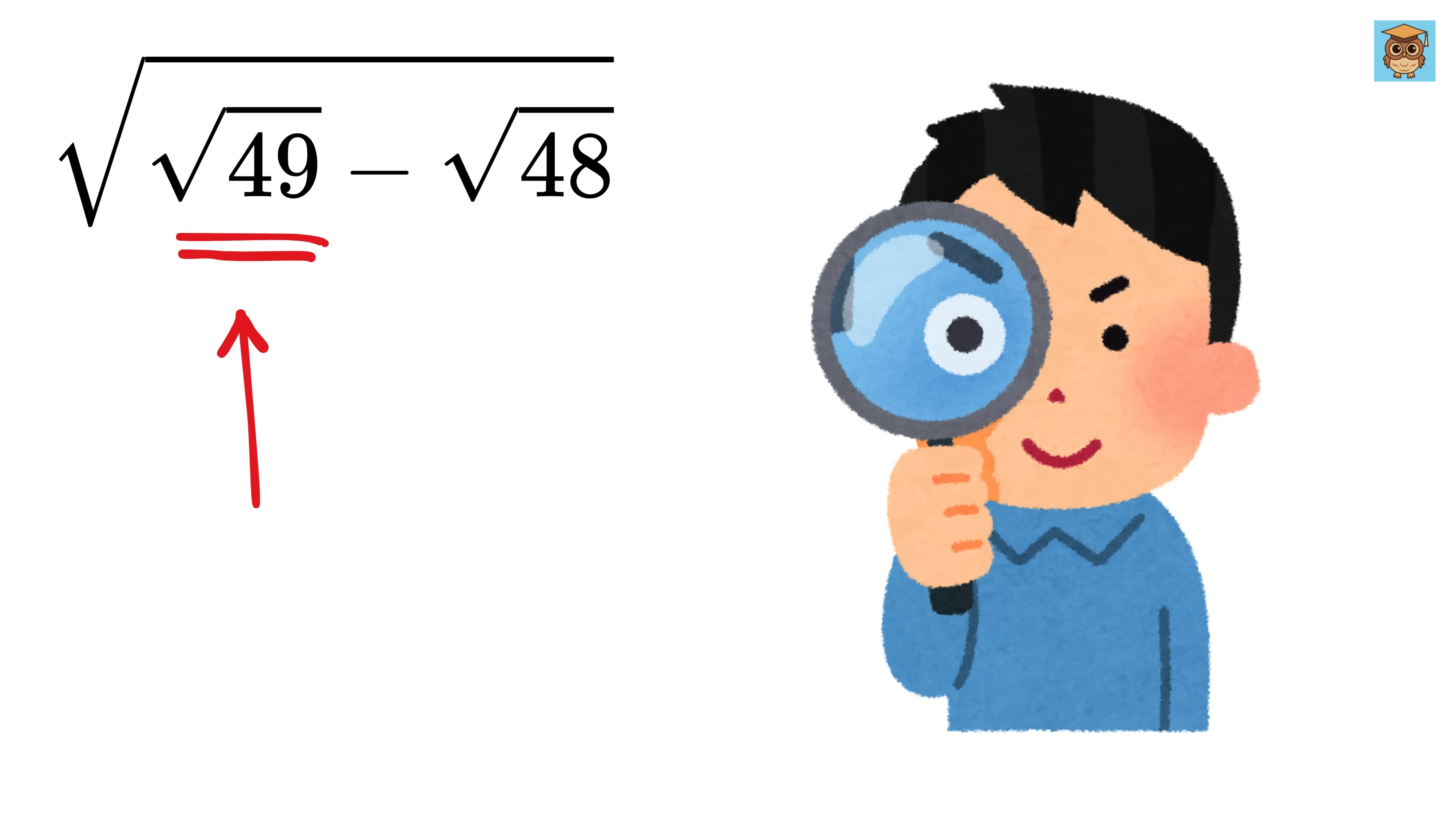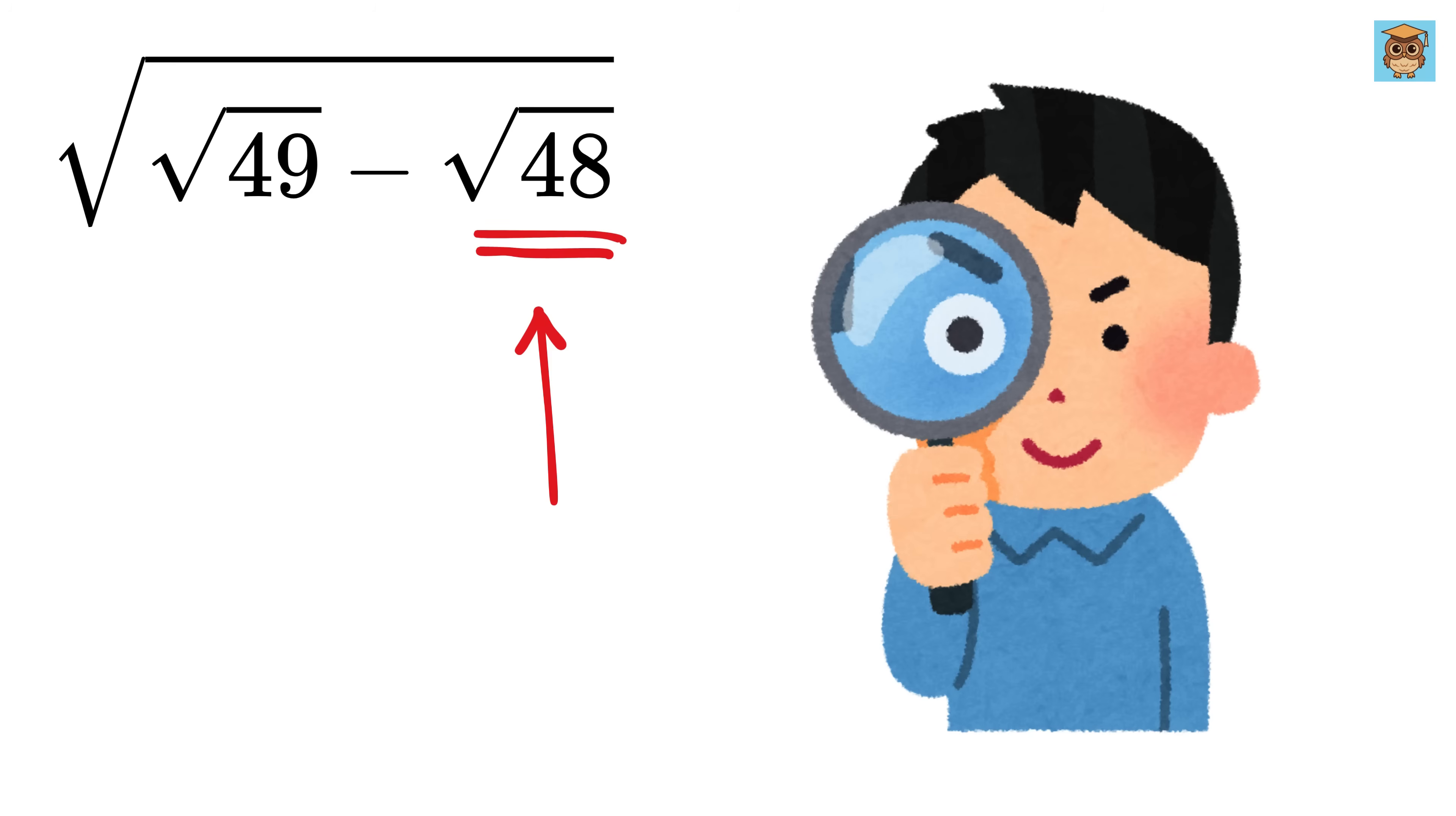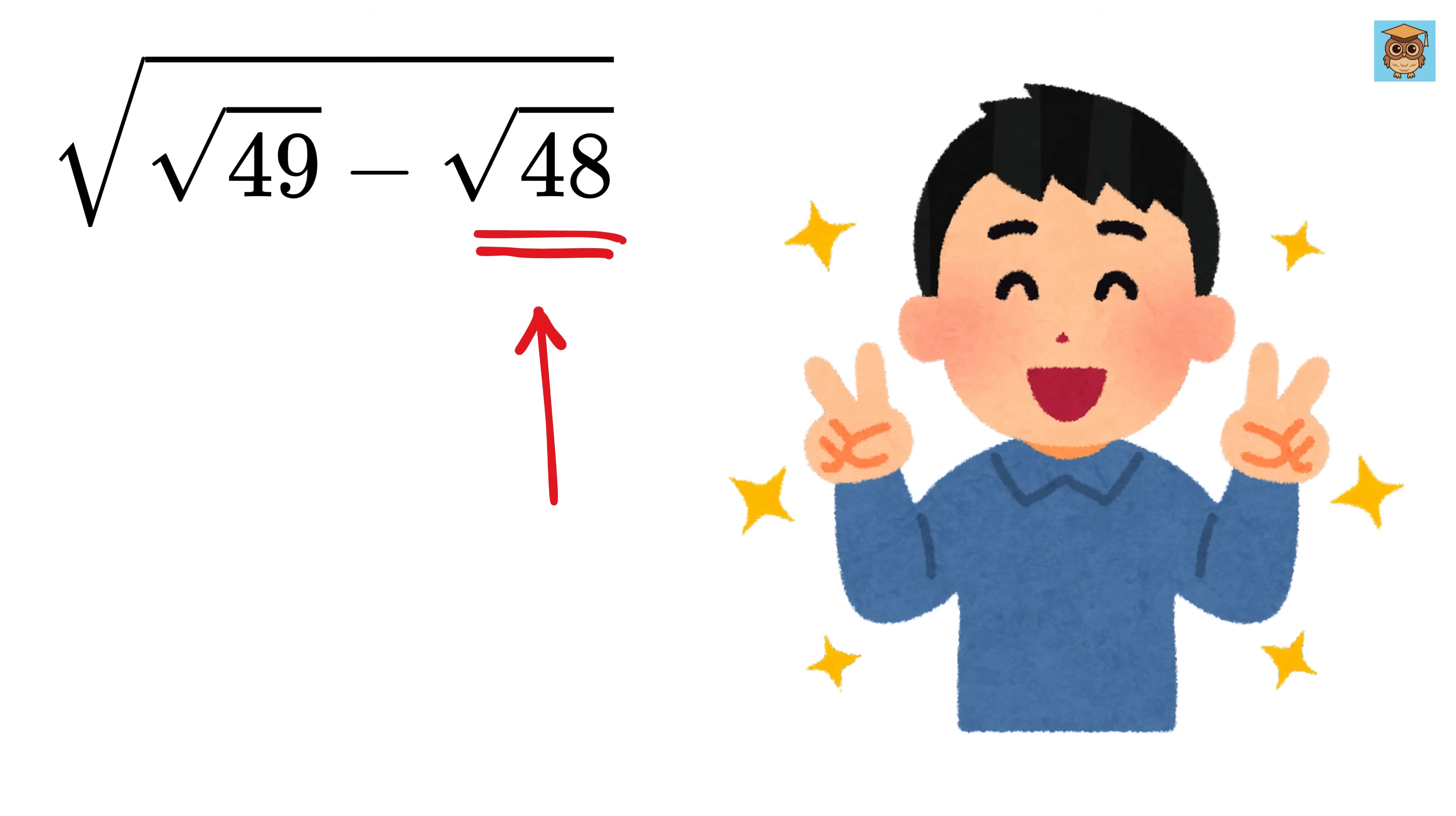At first, you will look at this square root of 49 and you will think, huh, this is easy. The square root of 49 is 7. But then you will look at this square root of 48 and your brain might say, wait, how am I supposed to find its square root? But don't worry.